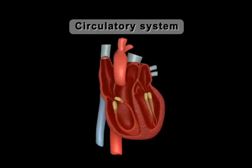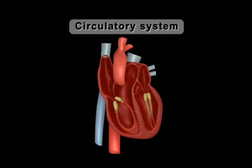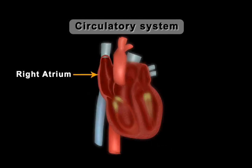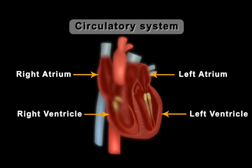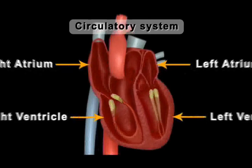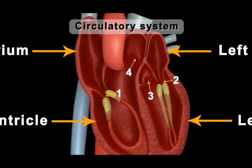The human heart has four chambers known as the right atrium, the left atrium, right ventricle and left ventricle. There are four valves in the heart. All these valves are one-way valves, which allow blood to flow in one direction only.